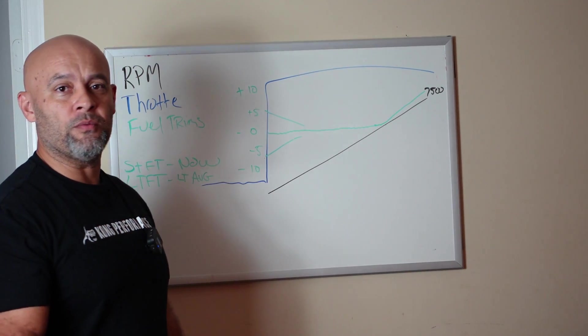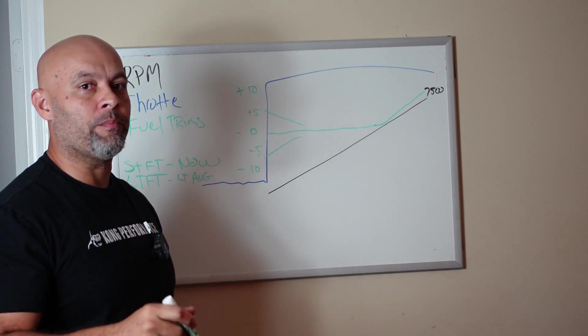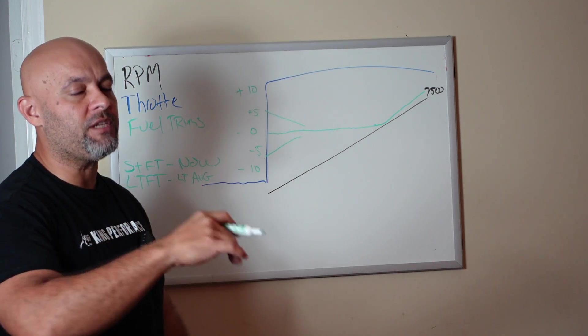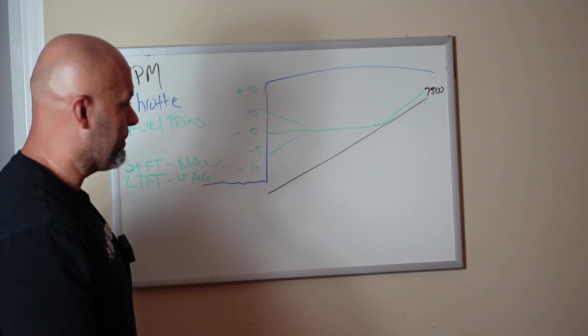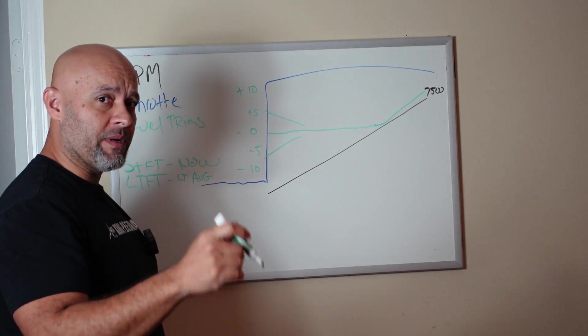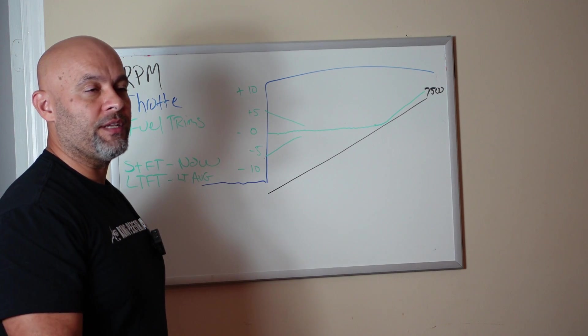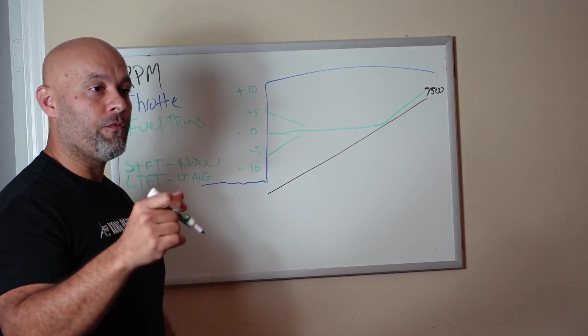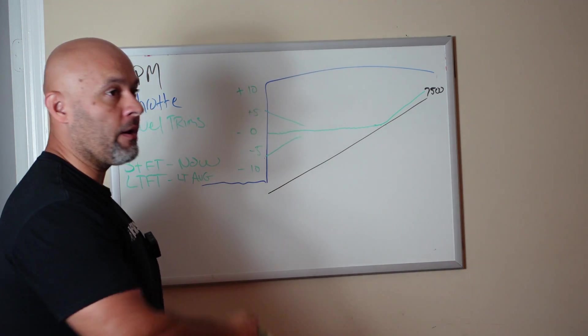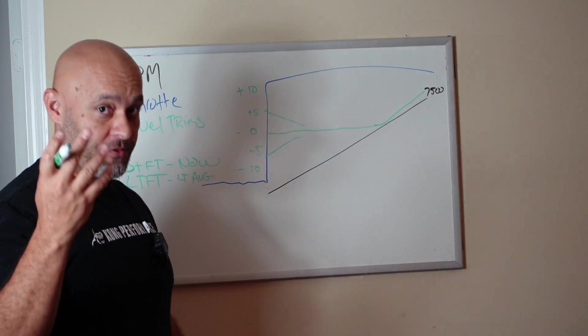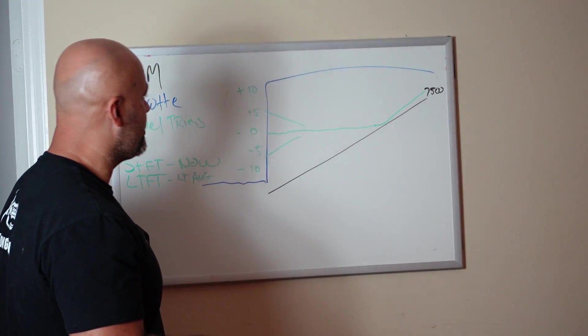Then you go, well Alex, what can you do? I'm like, well this is a sign of fuel delivery. Now Gen 1, Gen 2 Mustang does not have a fuel rail pressure sensor. Coyote GT500 does. Gen 1, Gen 2 Mustang does not have a fuel rail pressure sensor. We cannot see fuel pressure at the rail in the data log, period.